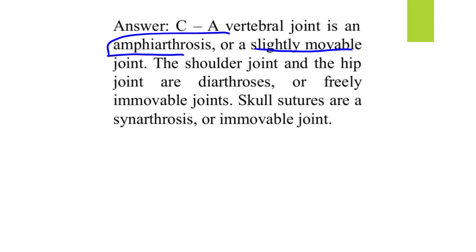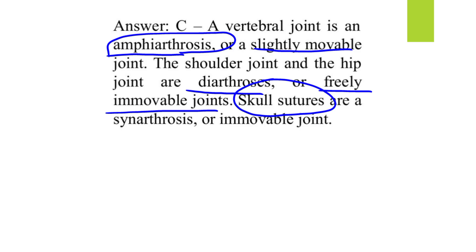The shoulder and hip joints are examples of diarthrosis, or freely movable joints, while skull sutures are examples of synarthrosis, which are immovable joints.